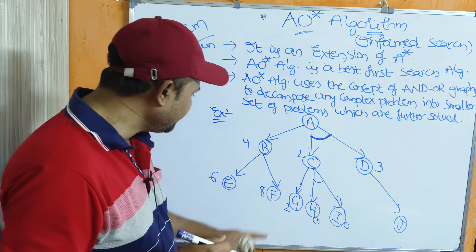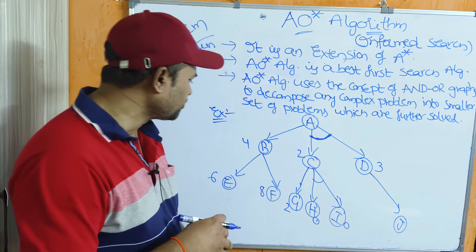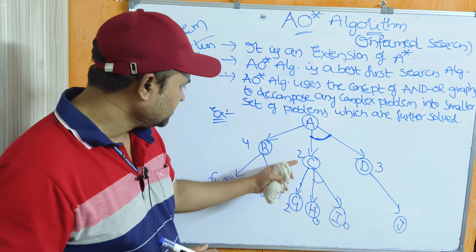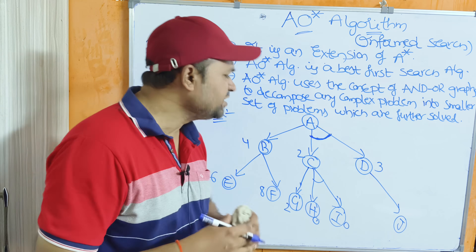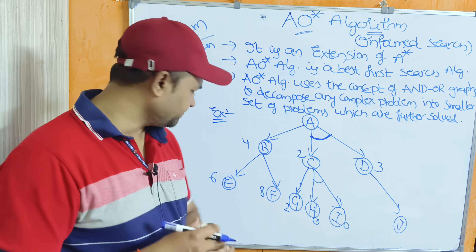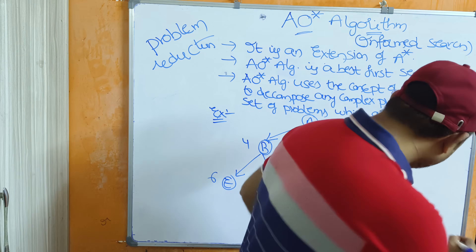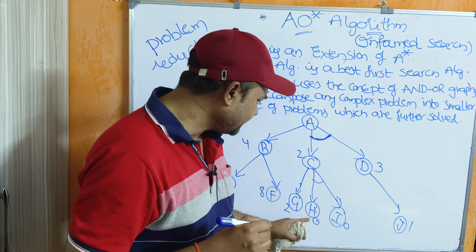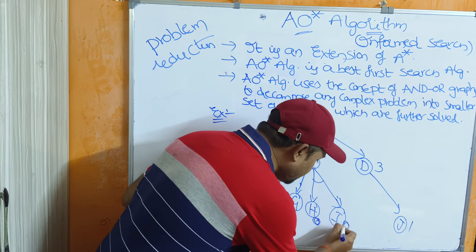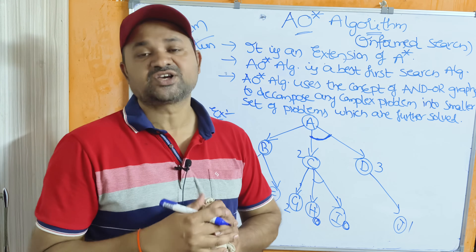B's children are E and F. B's heuristic function is 4, meaning the cost from B to the goal node is 4. Likewise, C's heuristic function is 2, D's heuristic function is 3. Nodes E, F, G, H, and I also have heuristic values. H and I are terminal nodes — if we reach these nodes, they are called solved nodes.